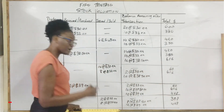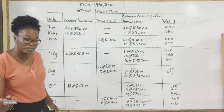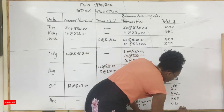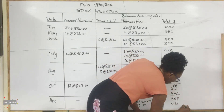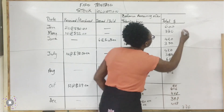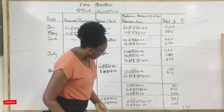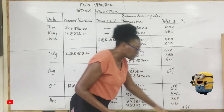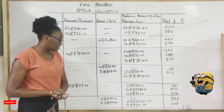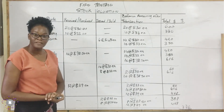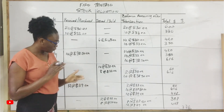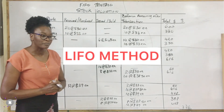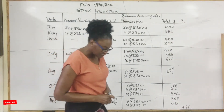So the total is $776. Record the total at the bottom with a double line to show you have closed it up. That's the value of our stock at the end of December 2021. Thank you so much. Next time we'll move on to the LIFO method, followed by AVCO. Thanks so much.